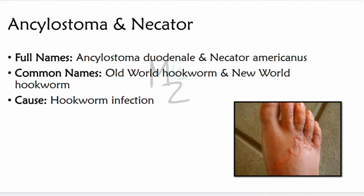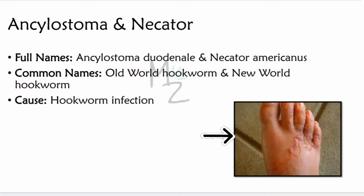Ankylostoma and Necator — full names. For Ankylostoma, it is Ankylostoma duodenale, and for Necator, it is Necator americanus. Both are also called hookworms because their heads are bent in a way that forms a hook-like structure. Ankylostoma is called the Old World hookworm and Necator americanus is called the New World hookworm. They are responsible for causing hookworm infection: ankylostomiasis for Ankylostoma and necatoriasis for Necator. As seen in this picture, cutaneous larva migrans is caused by Ankylostoma or Necator larvae, which we'll discuss in the pathogenesis section.